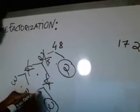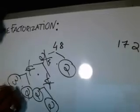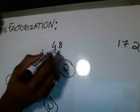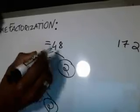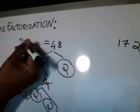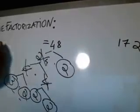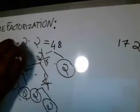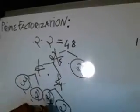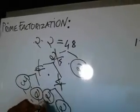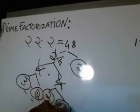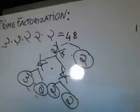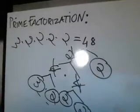Then you circle the numbers that cannot be broken down. You cannot break down the 2 — circle, circle, circle. You cannot break down the 3 — circle. So those are your prime numbers. The prime factorization of 48 is going to be 2 times 2 times 2 times 2 and a 3. That's the prime factorization of 48.